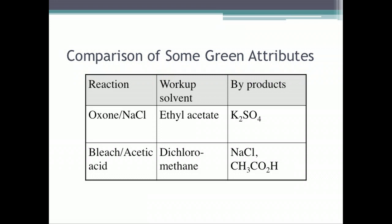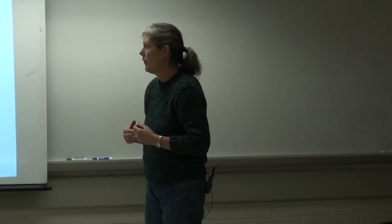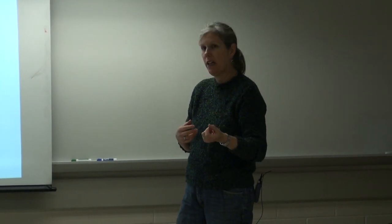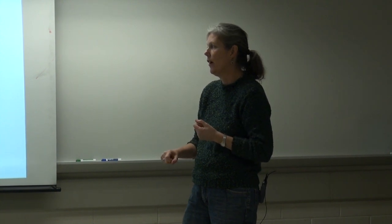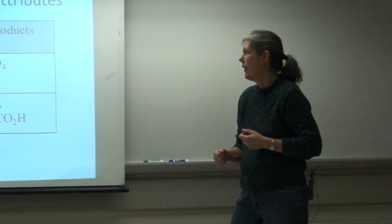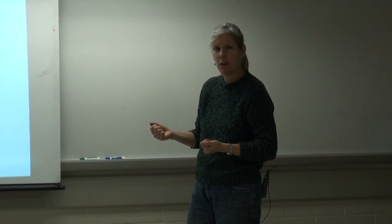We've run the bleach/acetic acid oxidation as an example of a green oxidation for these students, as opposed to using a chromium-6 reagent, but we decided to compare this to another green system — the oxone and sodium chloride. Both have relatively inert reactants: oxone being a very inexpensive potassium sulfate salt, and bleach being commercial or household bleach. The byproducts are also very inert, so in terms of green attributes for reactants and byproducts, they compare very straightforwardly.